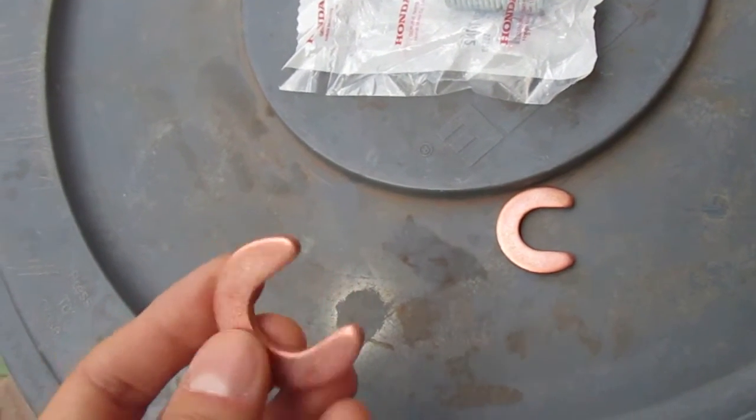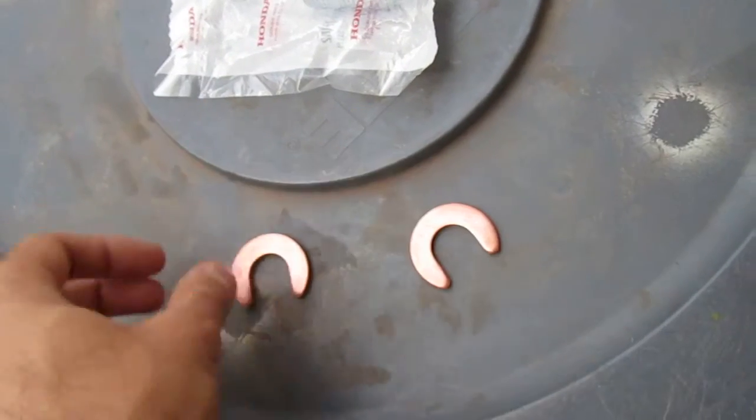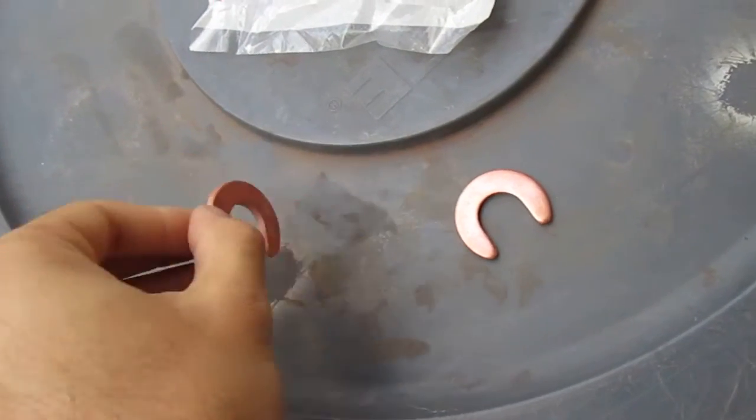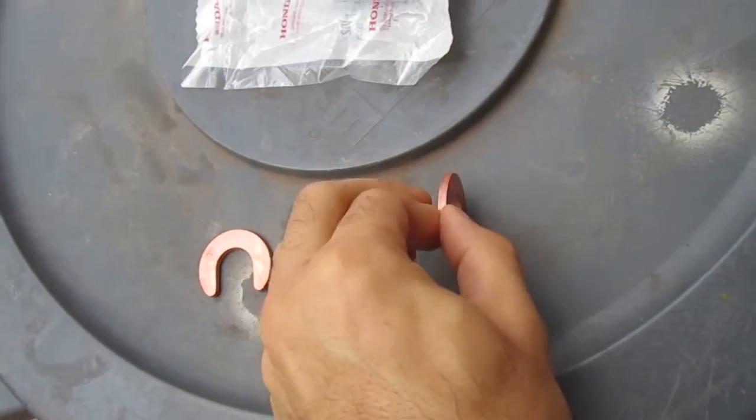They don't have these C-clips. They're just sitting in the carrier differential, whatever you want to call it. One on this side, one on the other side.